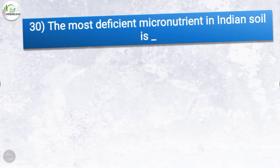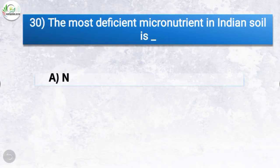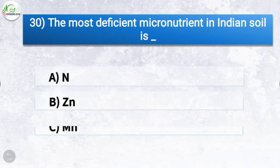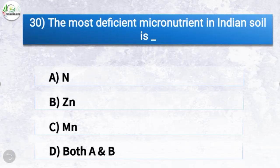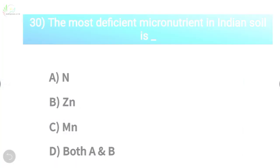Question number thirty: the most deficient micronutrient in Indian soil is which one? The options are nitrogen, zinc, manganese, or both A and B. The correct answer is option B, zinc. So the most deficient micronutrient in Indian soil is zinc.